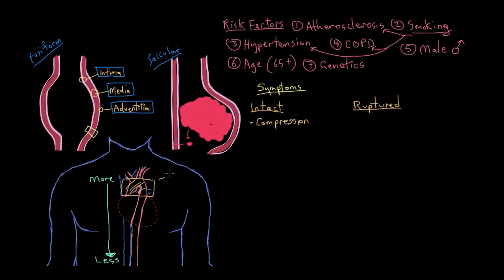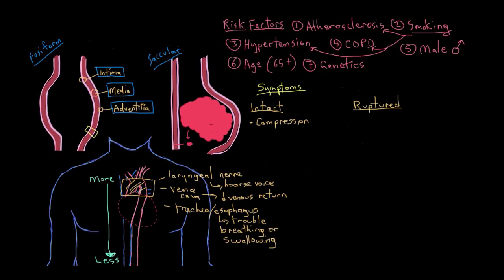So you might compress your recurrent laryngeal nerve, and that nerve controls your vocal cords. So if you compress that nerve, you might end up with a hoarse voice. Or you might compress your vena cava, and you'd have compromised venous return. Or you might compress your trachea or your esophagus, and then you might have airway or esophageal obstruction. The compression will also often cause pain in the region of the aneurysm.